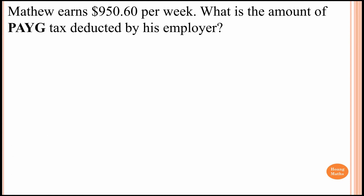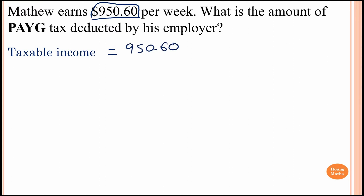Please stop the video and try this one yourself. Matthew earns $950.60 per week. To find his taxable income, we multiply $950.60 by 52 weeks in a year, which equals $49,431.20.